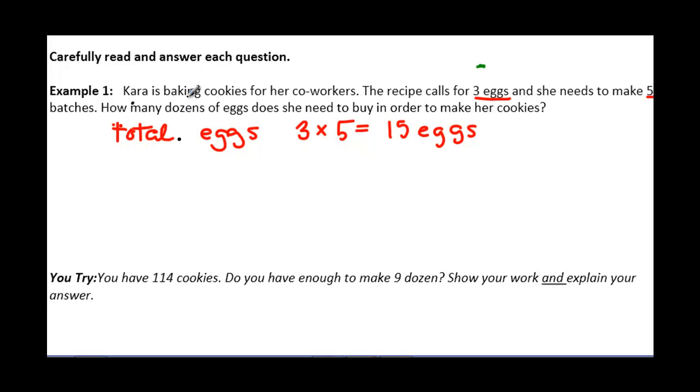Now the second part is how many dozens of eggs does she need to buy in order to make the cookies? Well, I know one dozen equals 12. So if I divide 15 by 12, I will get 1.25. Now I don't really know what this .25 is. So if I do 15 and I subtract 12, I'll get three left over. So I know that I need one dozen and I'll have three extra eggs. So in order to cover for these eggs, I'm going to have to buy two dozen eggs.